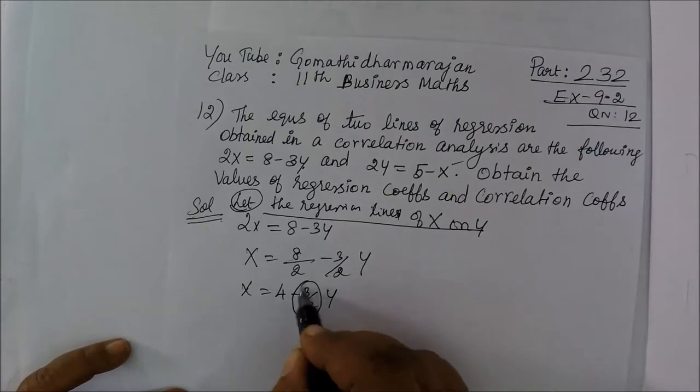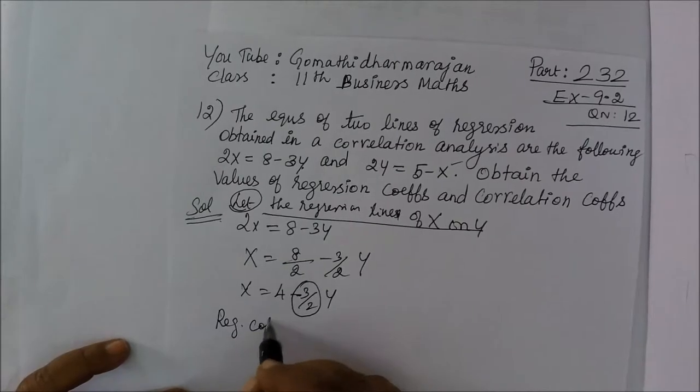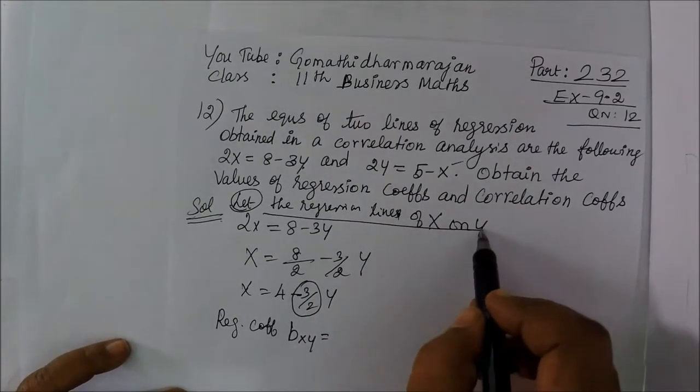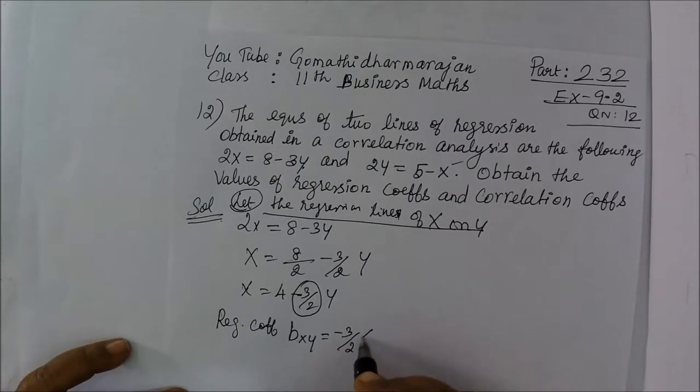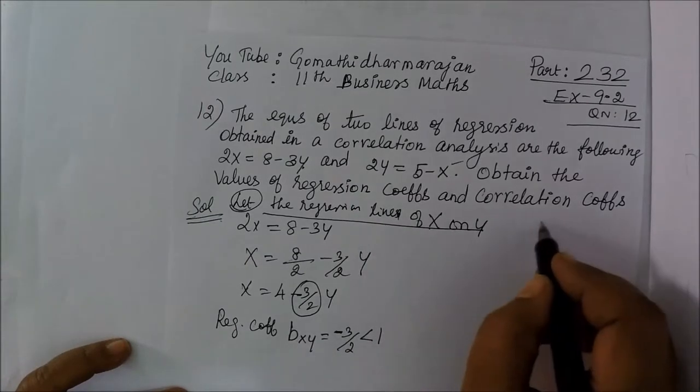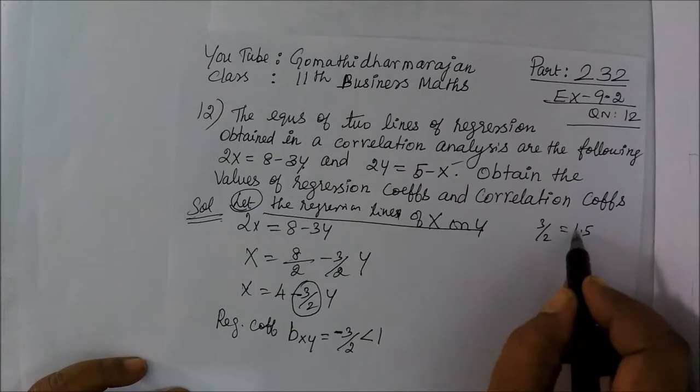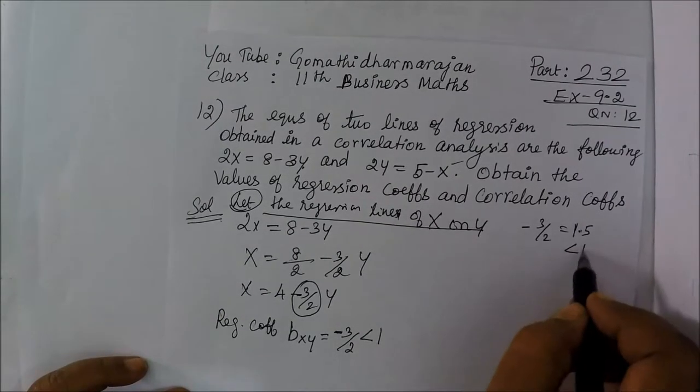Now we will write this as bxy. We will write x on y. So that is bxy. This is minus 3 by 2. We will write less than 1. Why is minus 3 by 2? 3 by 2 is 1.5, so 1.5 is less than 1, but this is minus. So this is minus 1.